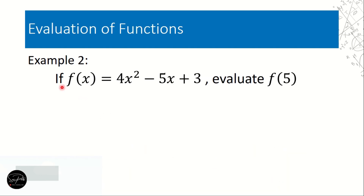Let's have example number 2. If f(x) = 4x² - 5x + 3 — we have two x's here: the first x is raised to the second power and the second x is multiplied by -5. Evaluate f(5).